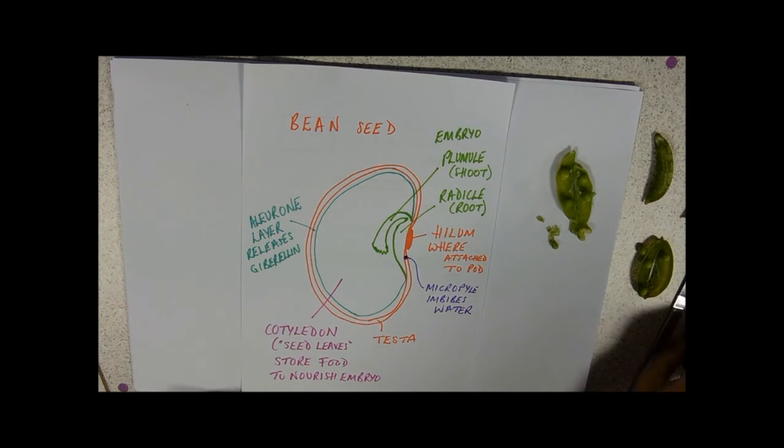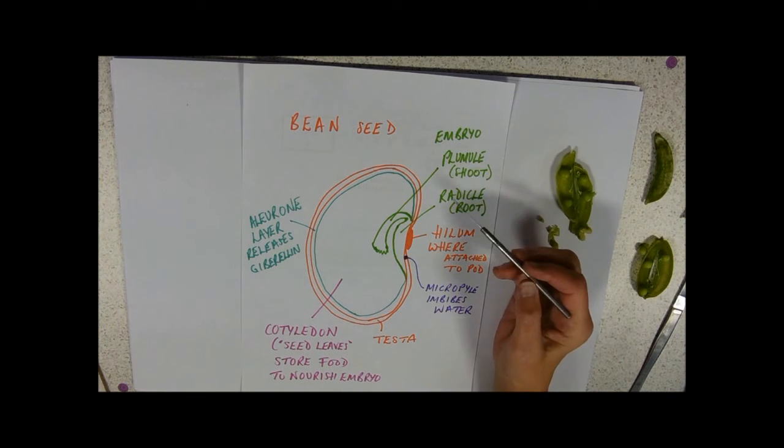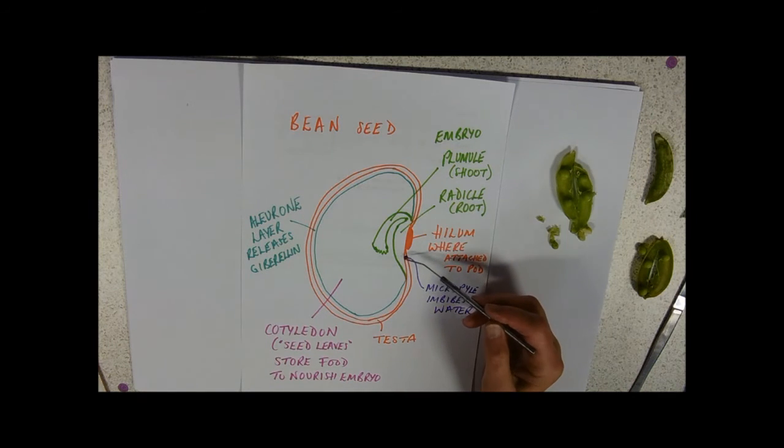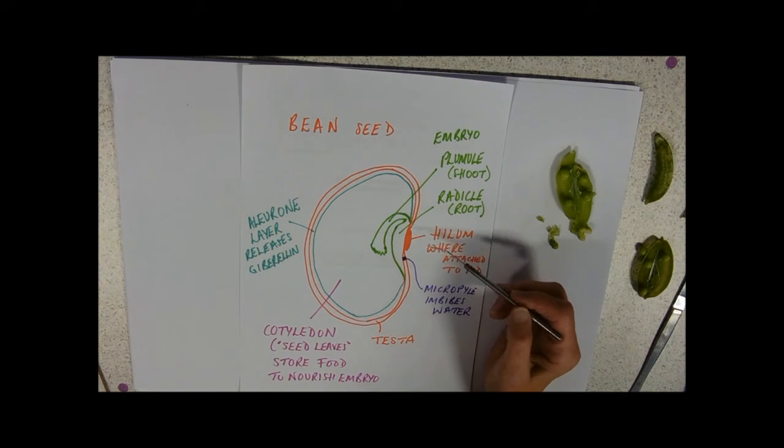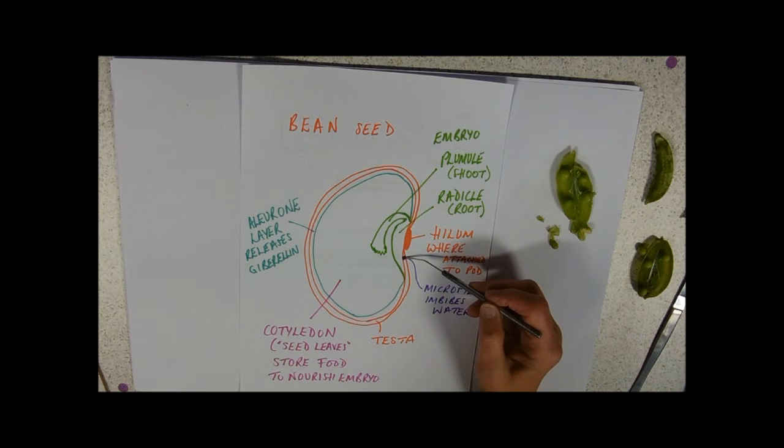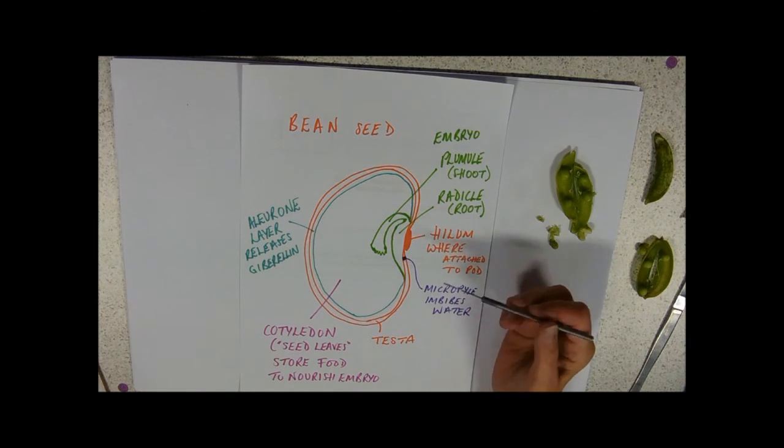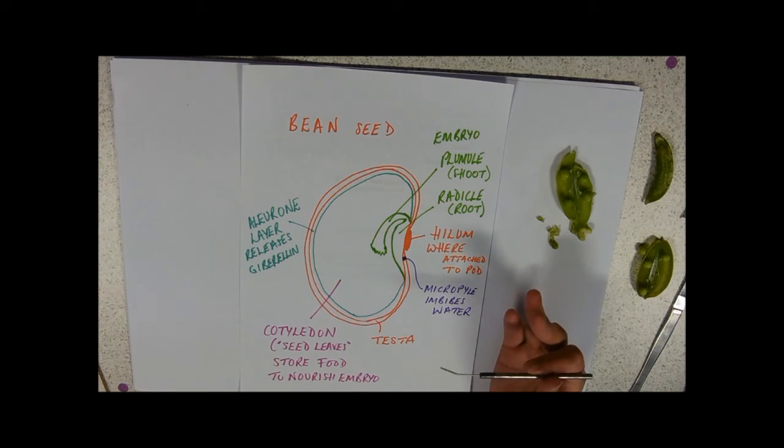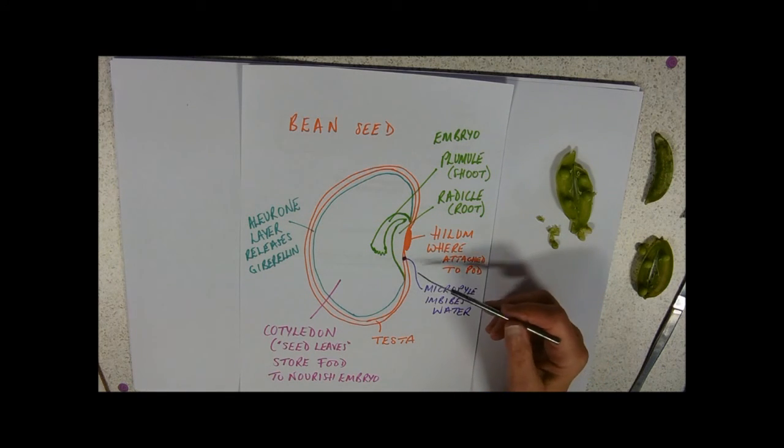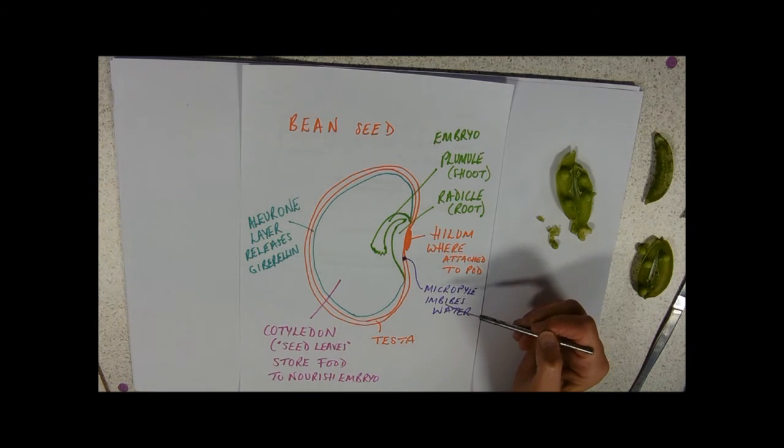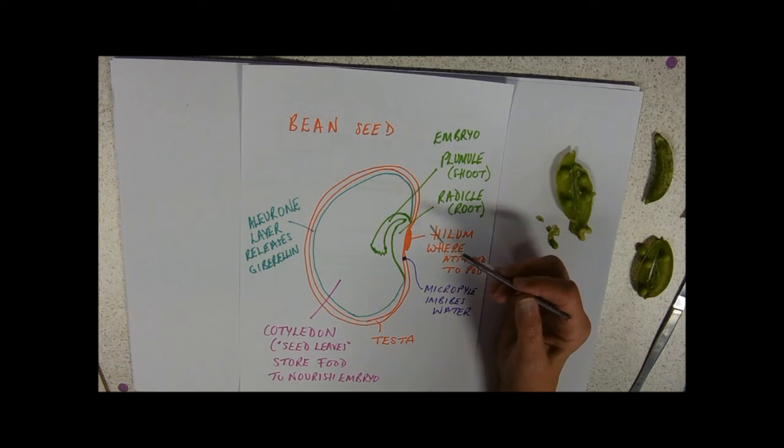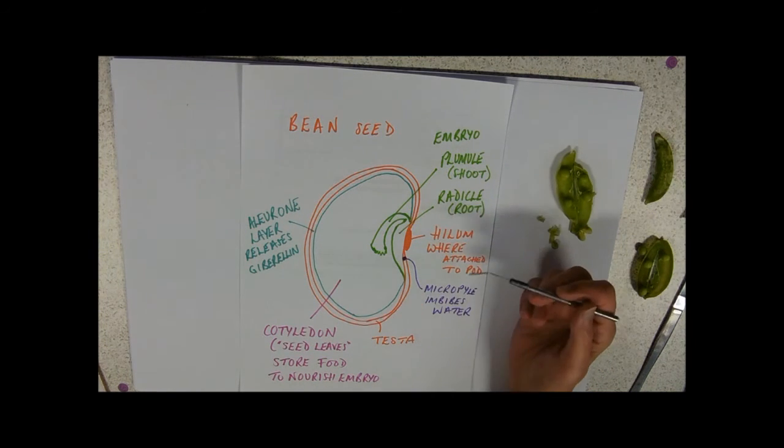This is a very typical diagram that you might get in the exam. Here we have the hilum, where the bean was attached to the pod. Underneath that, the micropyle. The micropyle's role in making a seed into a seedling is to imbibe water. It takes in water through the micropyle, then we can mobilize the enzymes and start the germination process.